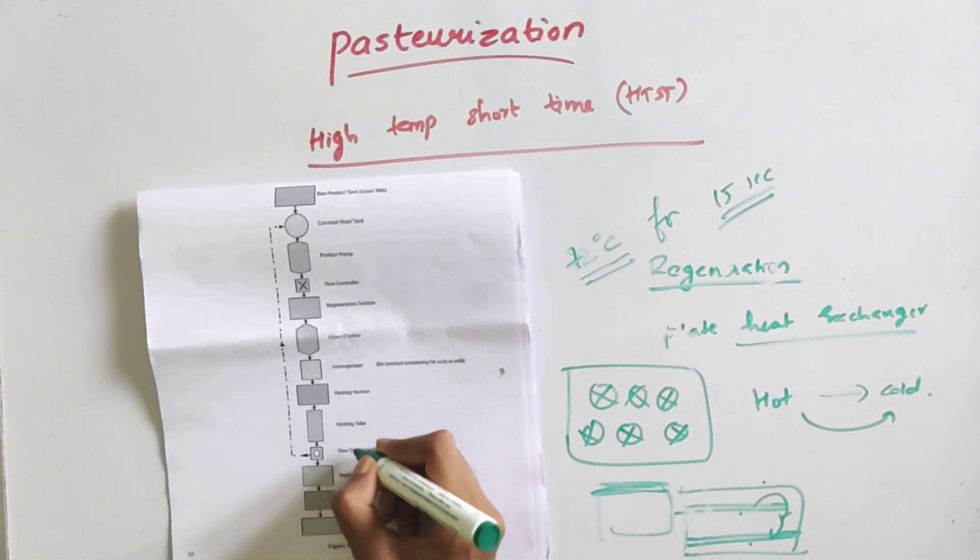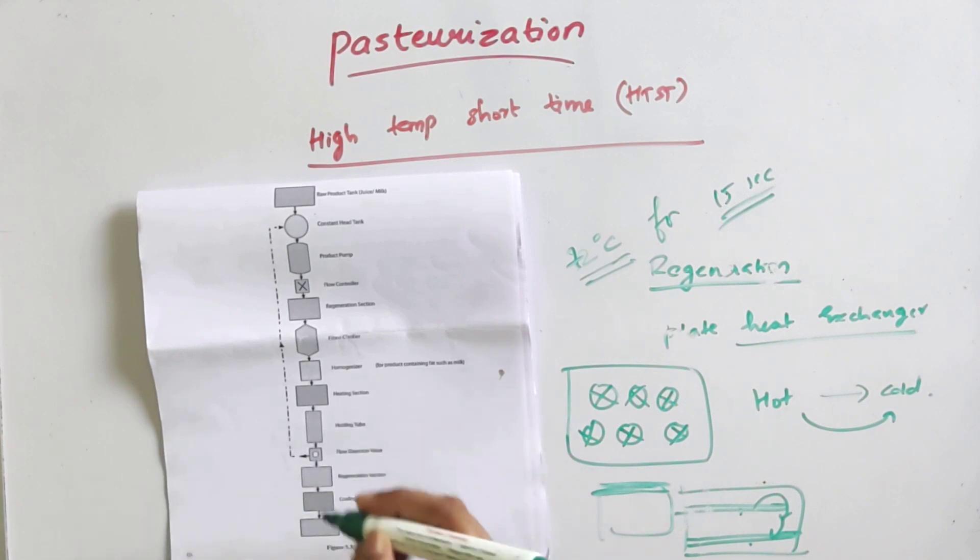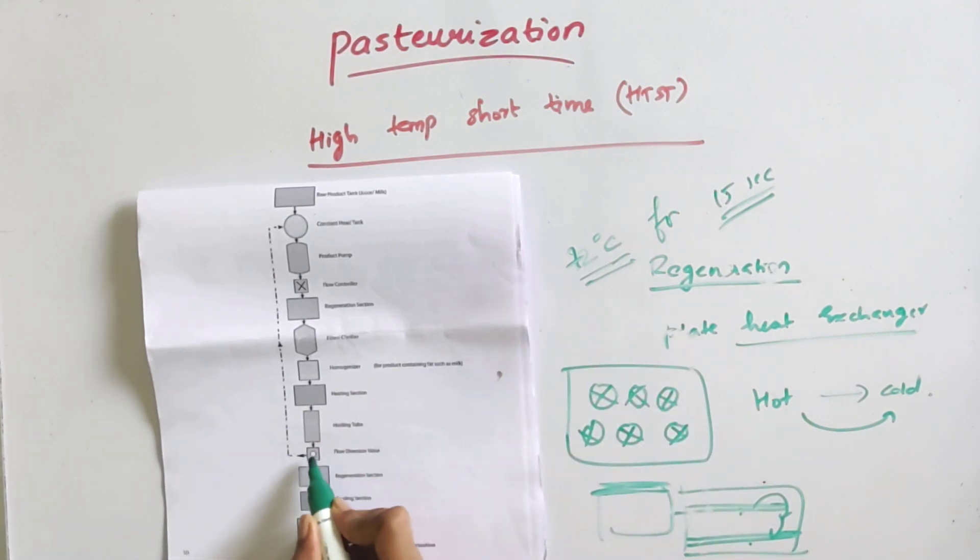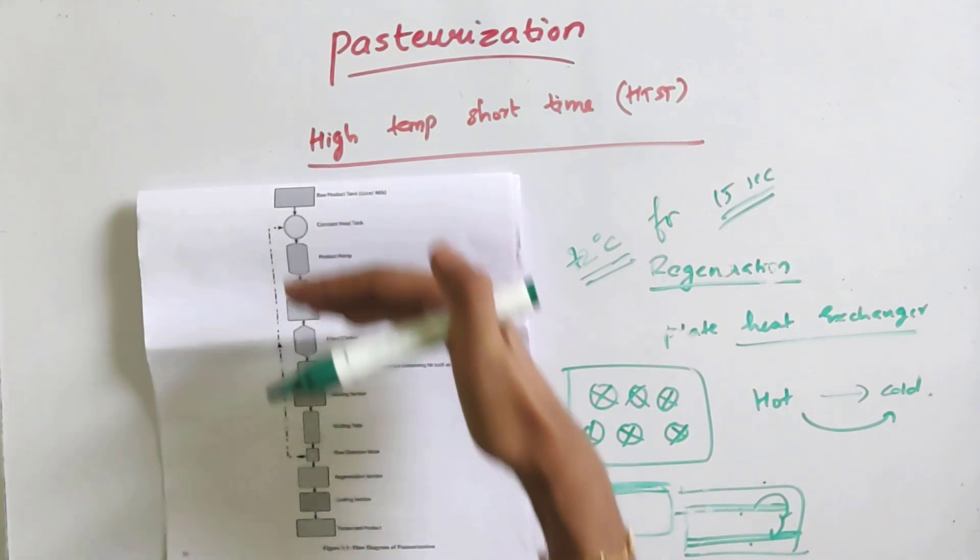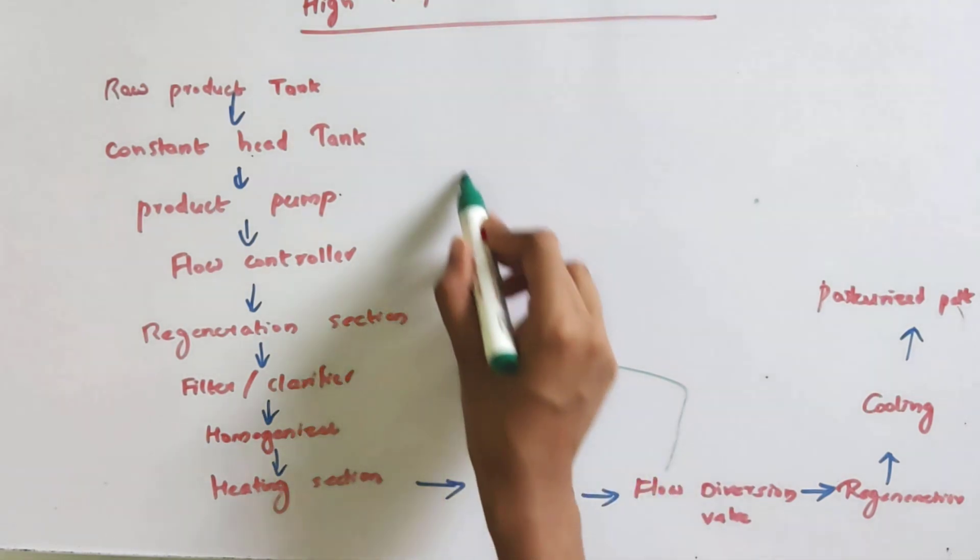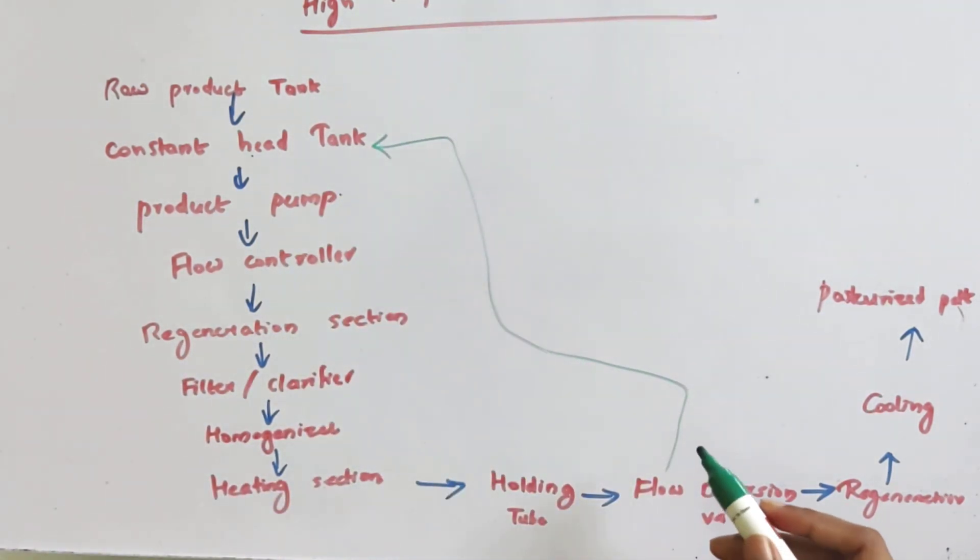That is flow diversion. If the product is not properly pasteurized in the holding tube, the flow diversion will constantly repeat the process. If the heat is not sufficient, it will be diverted back to repeat the process until properly pasteurized.